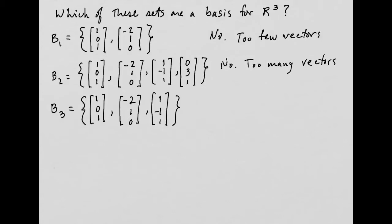Well, what about B3? It has exactly three vectors. So we don't say yes, we can say maybe. Now we have to check and see if B3 satisfies the conditions of a basis.